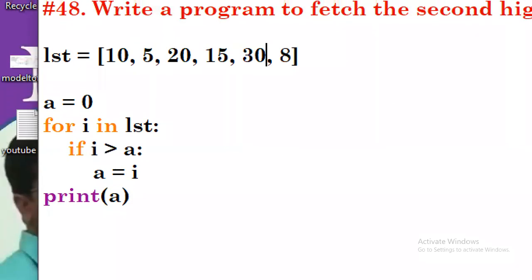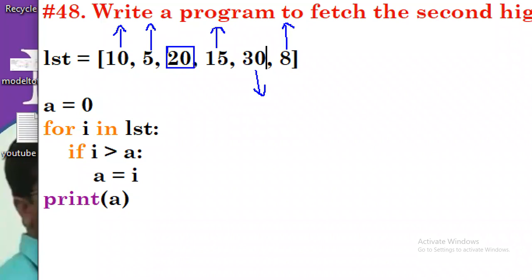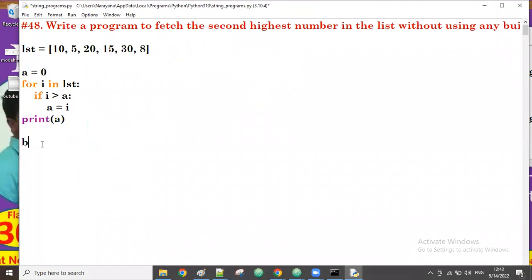The logic is: the second highest value — say 20 — must be greater than all other numbers except the highest. So 20 must be greater than all the other numbers but less than the highest number. The second highest element must be bigger than all elements but lower than the highest element. We'll take b equal to zero.